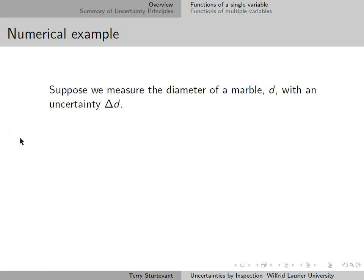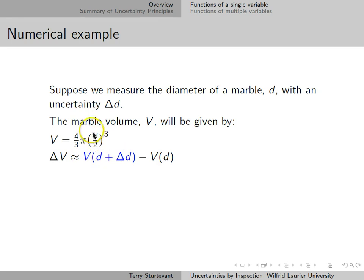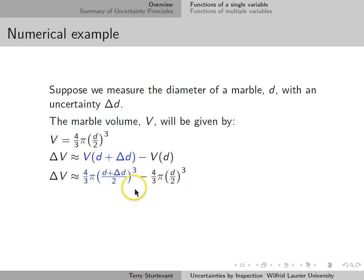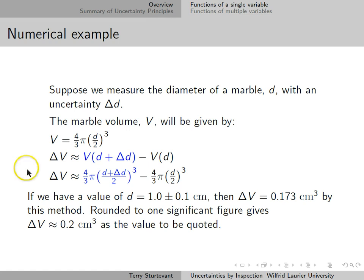Here's an example with numbers. Suppose we measure the diameter of a marble, d, with an uncertainty delta d. The volume of a marble is given by (4/3)π r³, and r the radius is half the diameter, so the volume is (4/3)π (d/2)³. The uncertainty in the volume is the volume with d replaced by d plus delta d, minus the volume with d. So: (4/3)π ((d plus delta d)/2)³ minus (4/3)π (d/2)³. If d is 1 plus or minus 0.1 centimeters, then delta V is 0.173 cubic centimeters by this method, which rounds to 0.2 cm³.